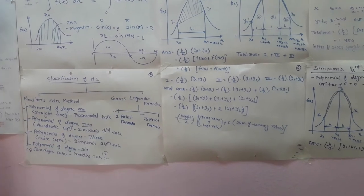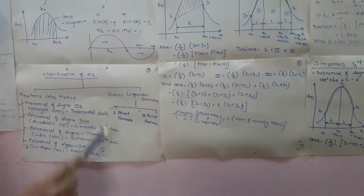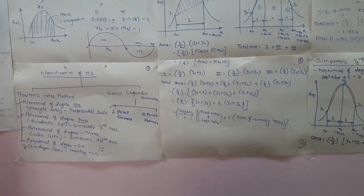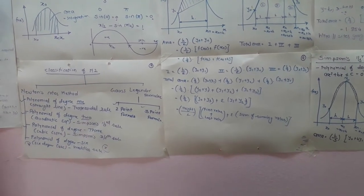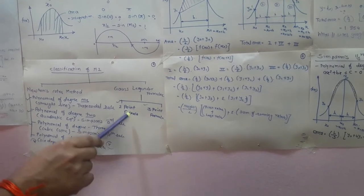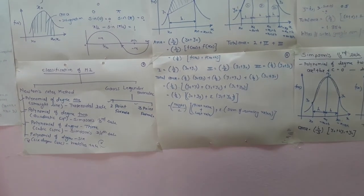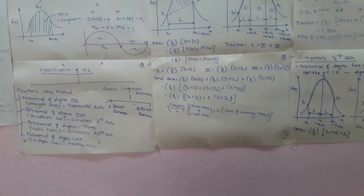The second classification for the evaluation of integration is the Gauss-Legendre's formulae, which consists of a 2-point formula and a 3-point formula.